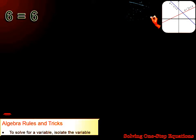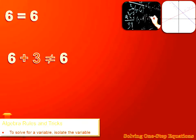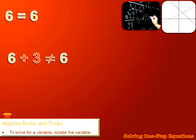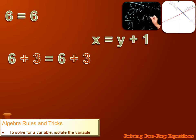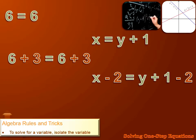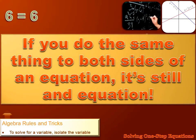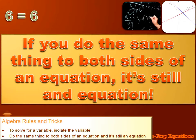You all know that 6 equals 6. Well, what if I were to add 3 to the left side of that equation? Now it'd read 6 plus 3, but 6 plus 3 doesn't equal 6. However, if I were to add 3 to both sides of the equation, it'd read 6 plus 3 equals 6 plus 3, and that's true. The same is true in algebra. If you do the same thing to both sides of an equation, it's still an equation. That's our next rule: do the same thing to both sides of an equation and it's still an equation.